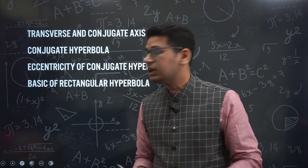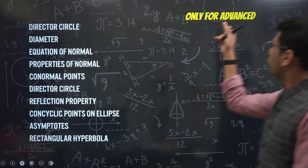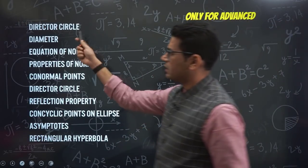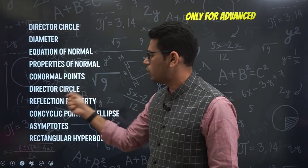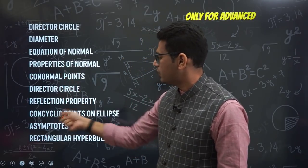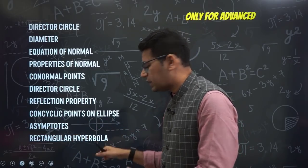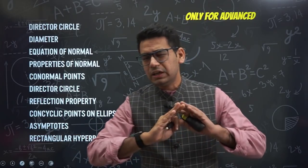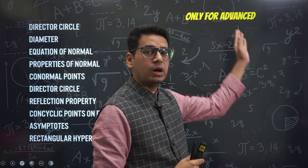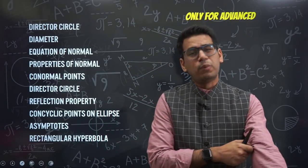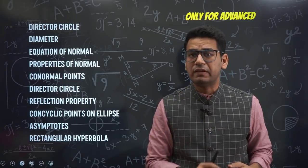The following topics are only for JEE Advanced, as clearly mentioned: director circle, diameter, equation of normal, properties of normal, co-normal points, reflection property, concyclic points, asymptotes, and rectangular hyperbola in depth. You do not need to study these for JEE Mains. Spending too much time on these topics is purely a waste of time if you are targeting JEE Mains only.